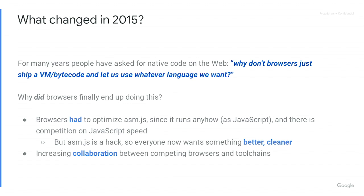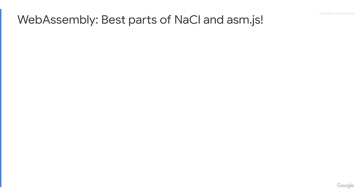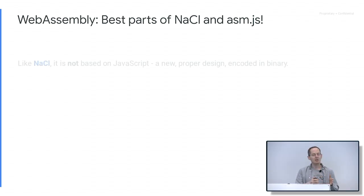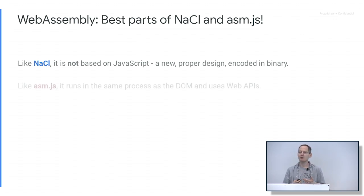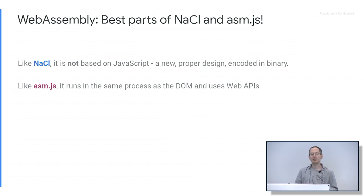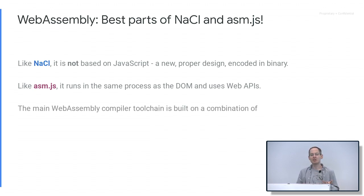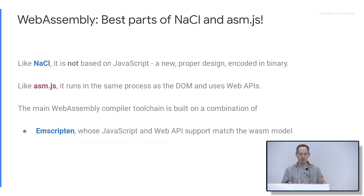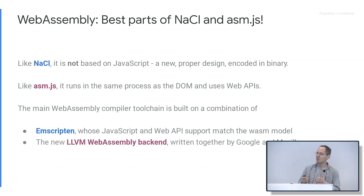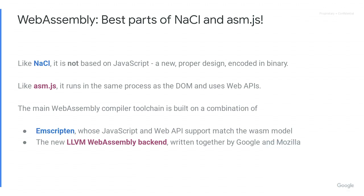This history shows in WebAssembly — these two paths eventually ended up working together. Just like NaCl, WebAssembly is not based on JavaScript; it's a new design, it's proper, it's binary. This is something NaCl very much got right. Like asm.js, it runs in the same process as JavaScript and uses normal web APIs — something asm.js got right. This also shows in our toolchain: we use Emscripten, which had the right JavaScript and web API model. It compiled to asm.js before; now we just made it compile to WebAssembly. Emscripten uses the new LLVM WebAssembly backend written in collaboration between tools people from Mozilla and Google — essentially the people who used to work on asm.js and PNaCl are now working together on this.